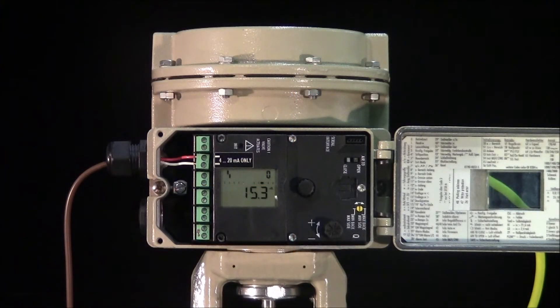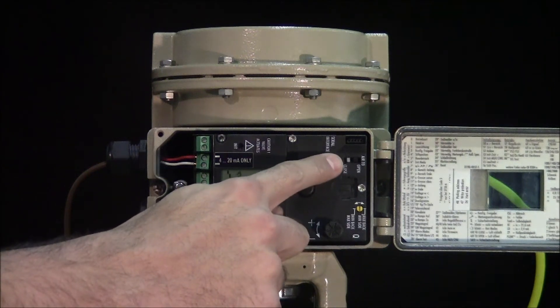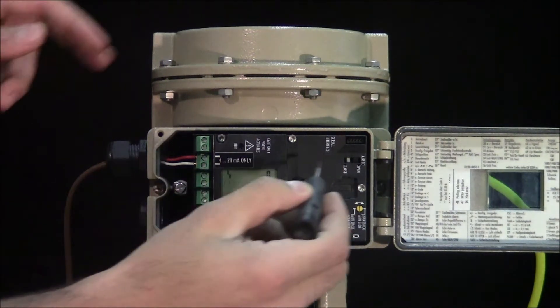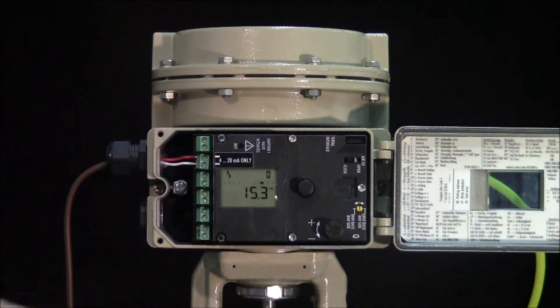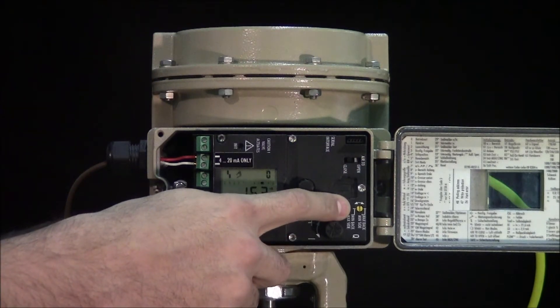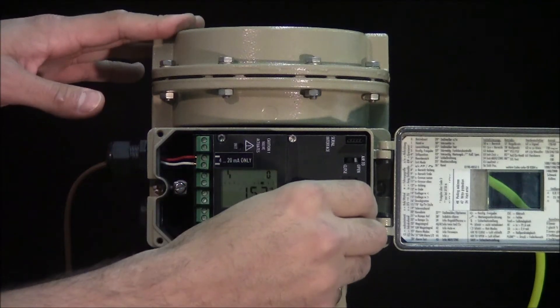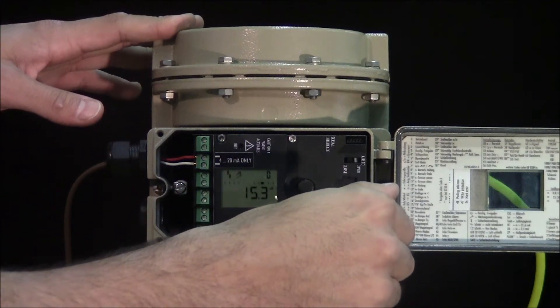This actuator fails open upon loss of air supply, therefore our first step will be to set our positioner for the air-to-close operation. For the 120 actuator, it's advisable to restrict the flow. This will prevent overshooting of our set point.